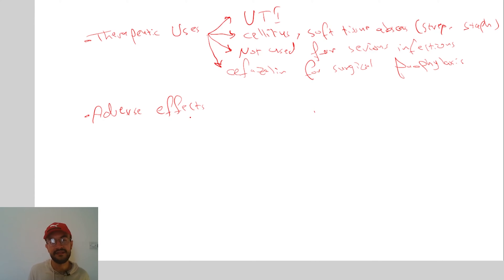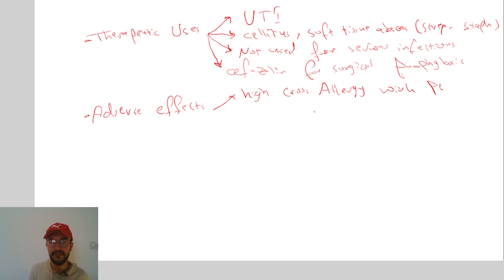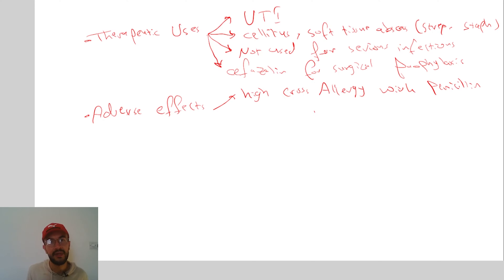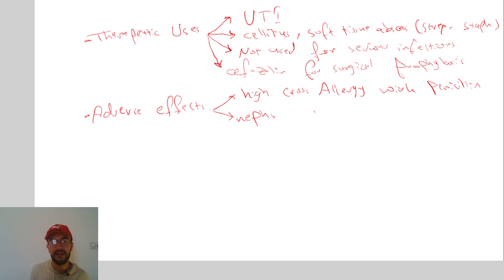Regarding the adverse effects of the first generation cephalosporins, there is high cross-allergy with penicillin. If the patient is allergic to penicillin, they are also allergic to first generation cephalosporins. If the patient has a severe allergy to penicillin, such as anaphylaxis in their history, we do not give them first or second generation cephalosporins. The other adverse effect is nephrotoxicity, which is only seen in the first generation cephalosporins — they are the only generation that causes nephrotoxicity.